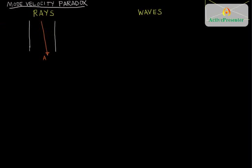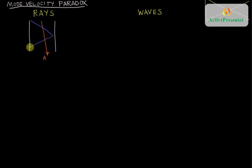We can consider another mode where the k-vector angle with the waveguide is much steeper. This is a little bit exaggerated, but the idea is that this would be close to the critical angle where the refraction would be at 90 degrees, just barely guided by the waveguide. So this would be another possible beam, and that's beam B.